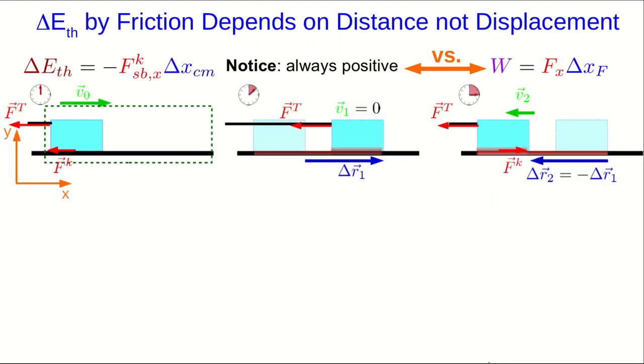Students are often confused by the difference between work by most forces and this change in thermal energy caused by friction. There's actually a subtle difference that doesn't really show up well in the equations as I've written them here. So let's have a look at a specific situation.